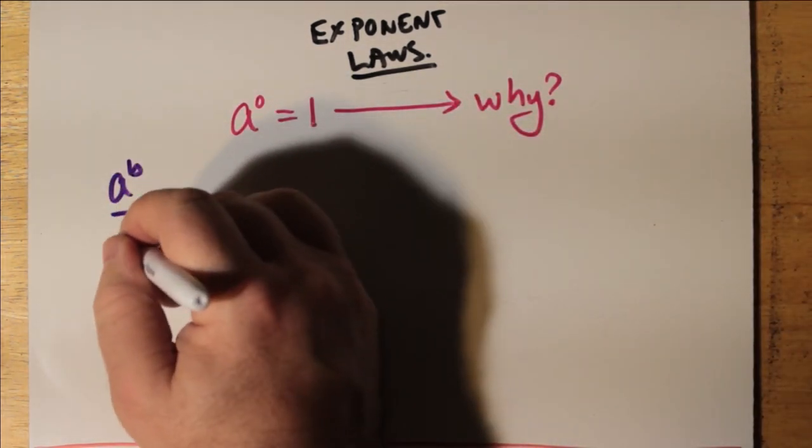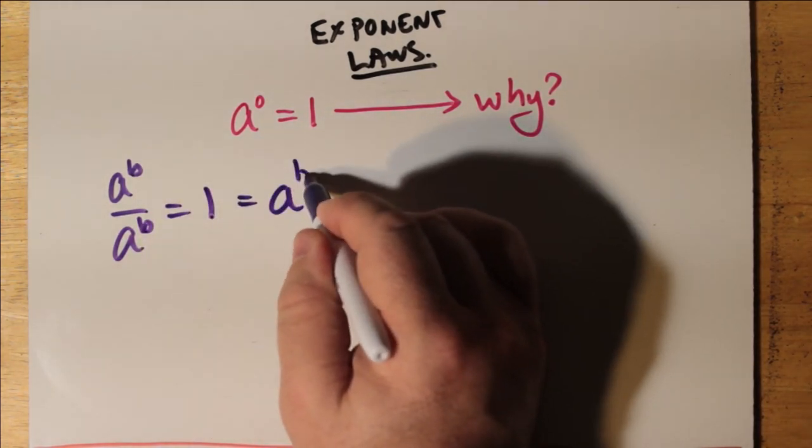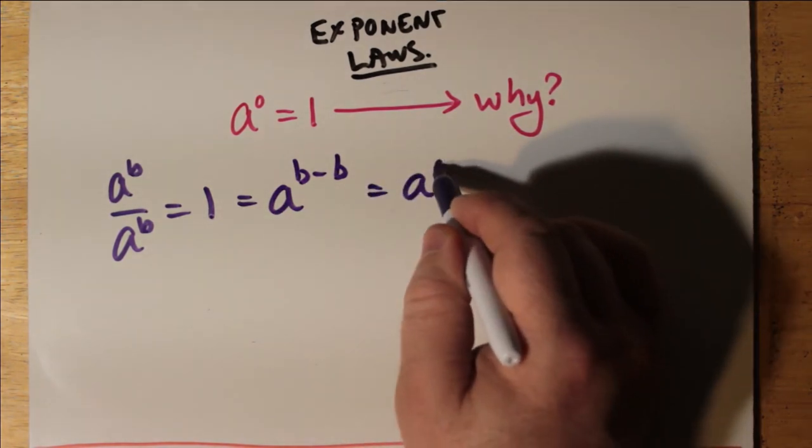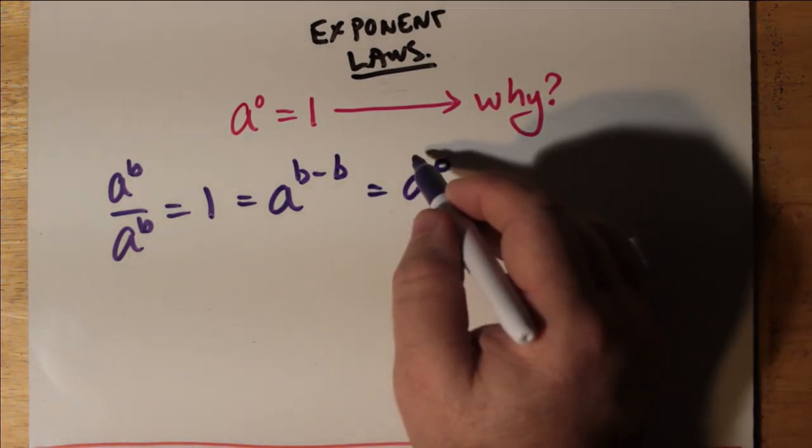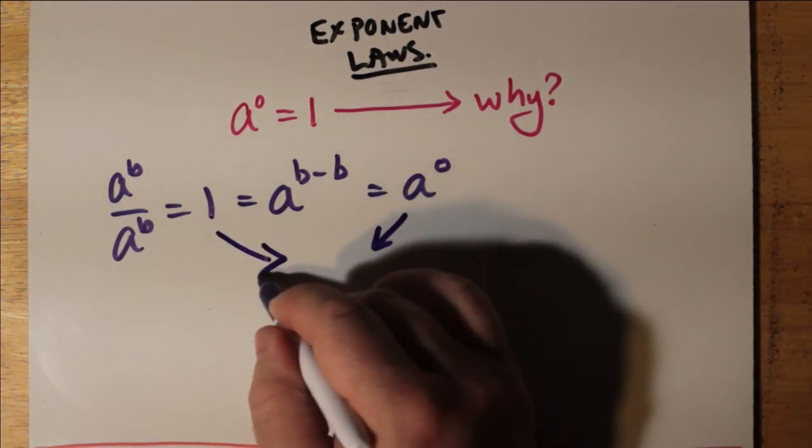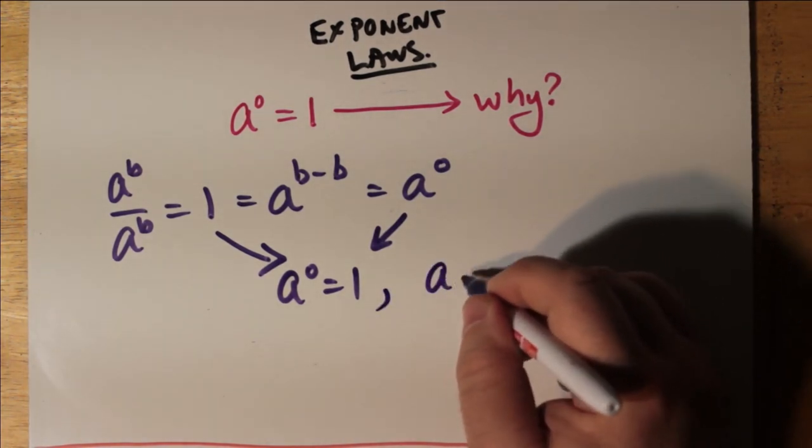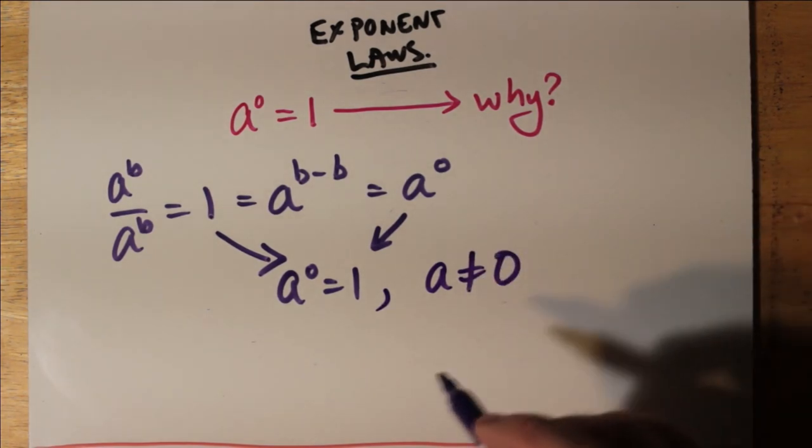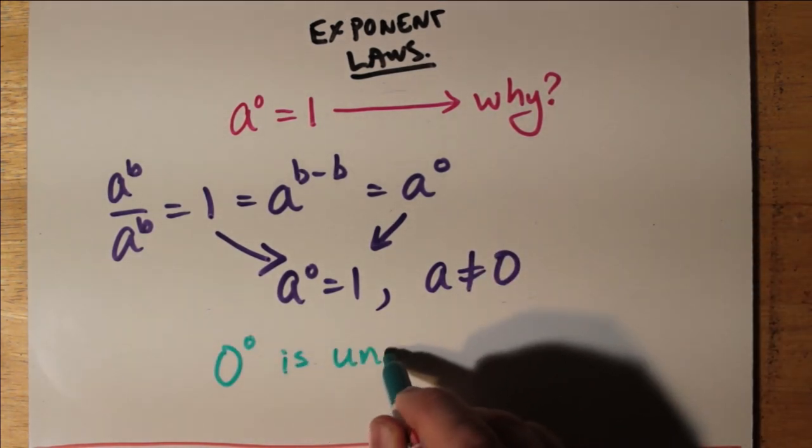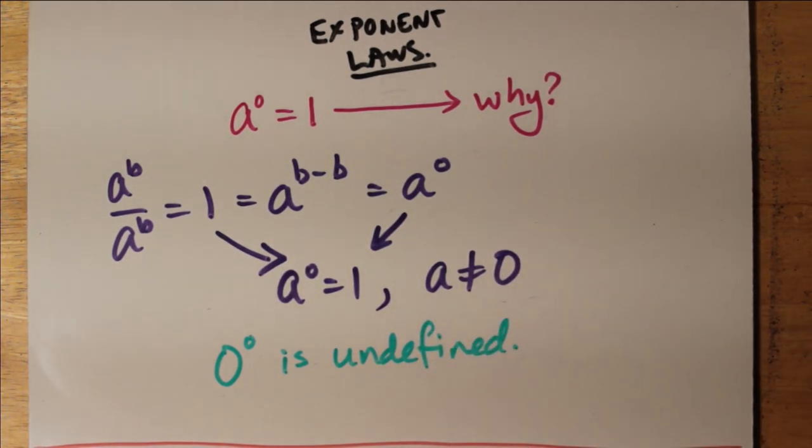Well, let's take a look at a to the b divided by itself. A to the b divided by a to the b is a number divided by itself, which means it must be equal to 1. And if we use our laws of exponents, that's a to the power of b minus b. And we know that b minus b, any number minus itself, is 0. And so we have a to the 0. So this is how we say that a to the 0 is 1. But we provide that a is not equal to 0. A cannot be allowed to be equal to 0. This is because 0 to the power of 0 really has no definition. It's undefined. If you try that on your calculator, you'll get an error.